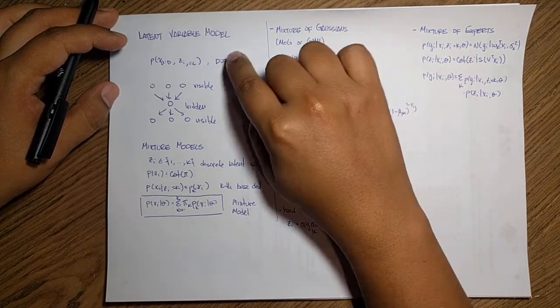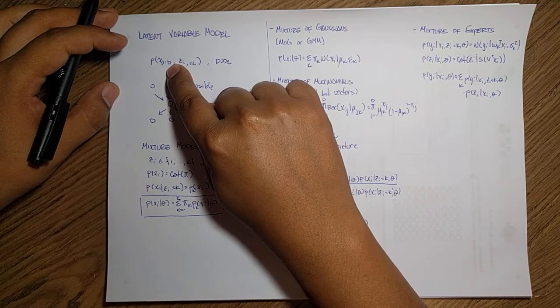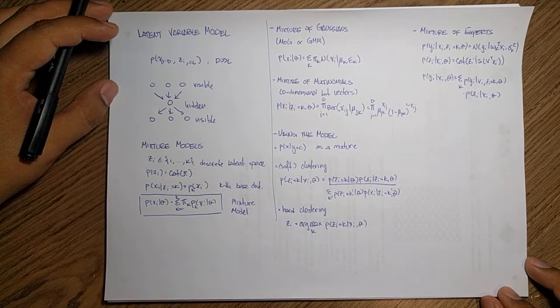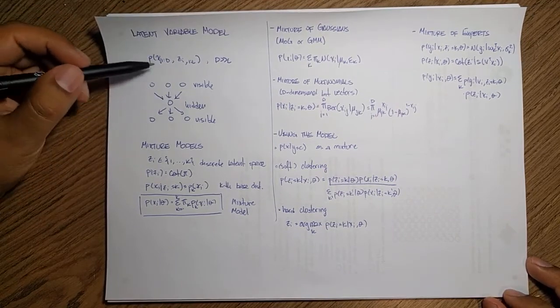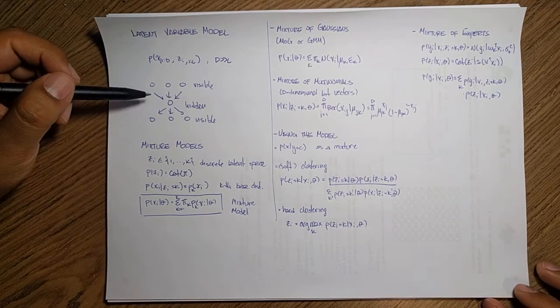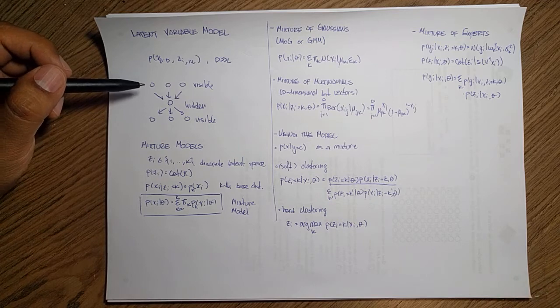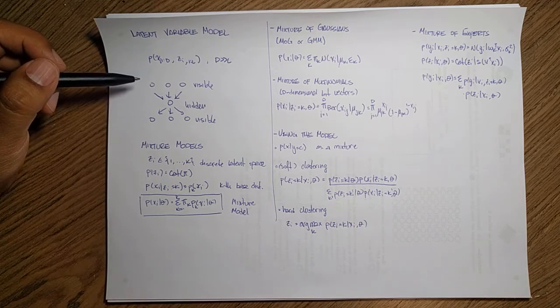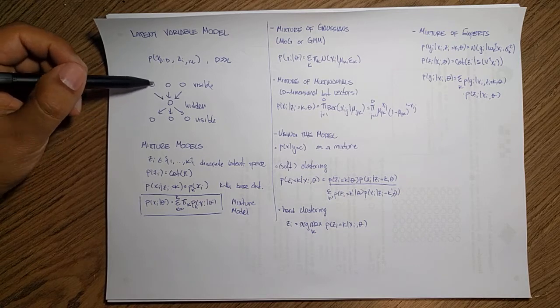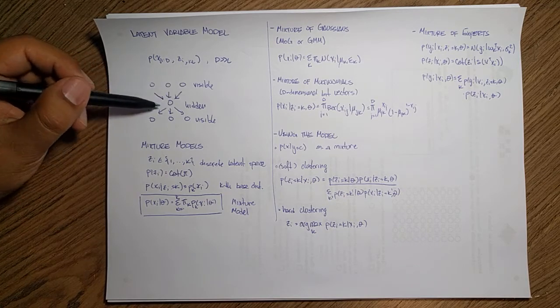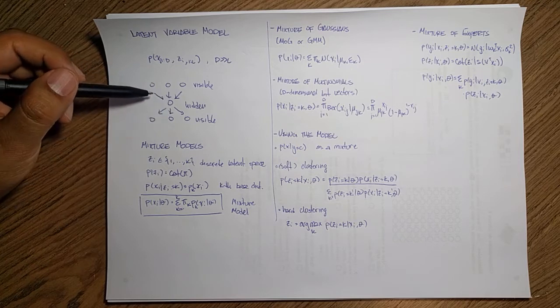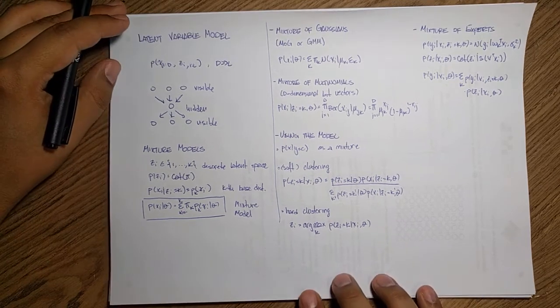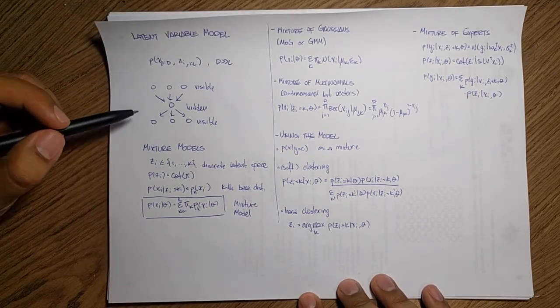But what we are assuming is that we have more visible variables than latent variables. And these latent variables are really useful because they allow us, for instance, to do compression or to do some distillation of representation in which we can just take only the information that is really necessary and put it into this hidden state. And we extend this idea of latent variables to our mixture models.